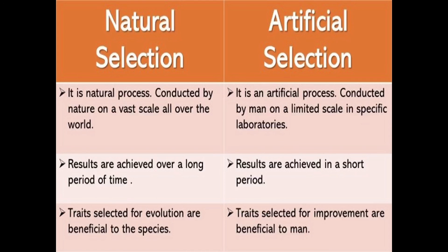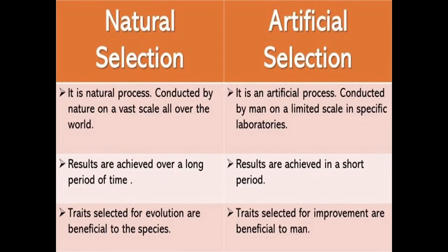Here is the difference between natural selection and artificial selection: natural selection takes a much longer time, whereas artificial selection occurs over a shorter time. That is all for variation.